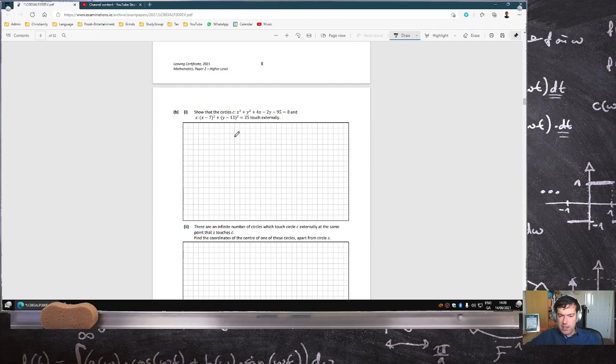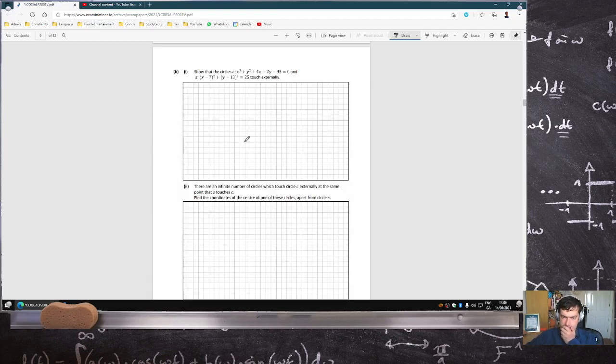So that circle and that third circle touch externally. So this circle is centered at (7,13), and the other one is at (-2,1). So for them to touch externally, the distance between the centers should be the sum of the radii.